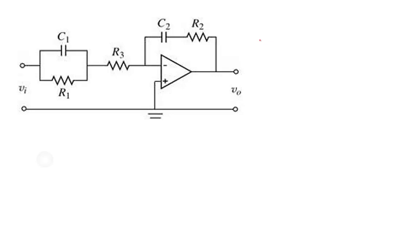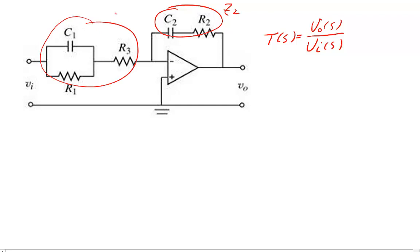We need to find the transfer function of this op-amp circuit, which is T(s) equals Vo(s)/Vi(s). Since this is a typical circuit for an op-amp, we can treat this one here as Z2 and this one as Z1.